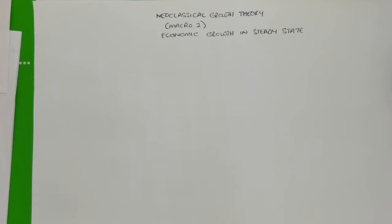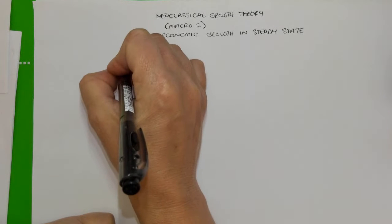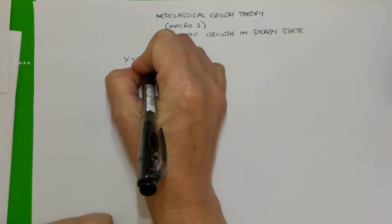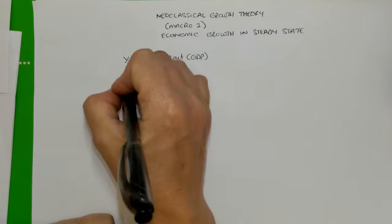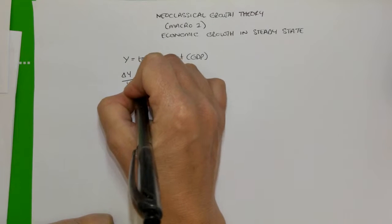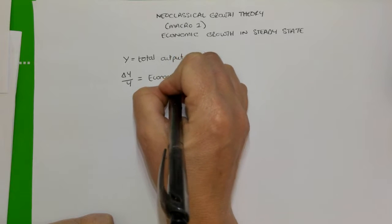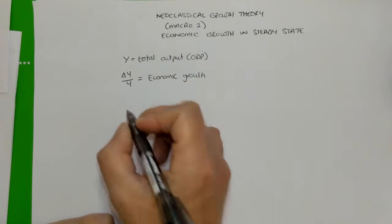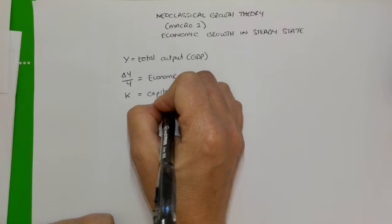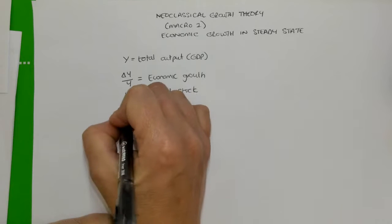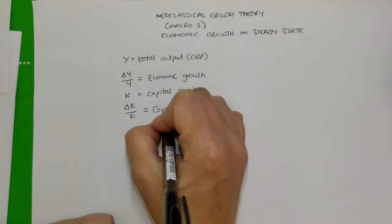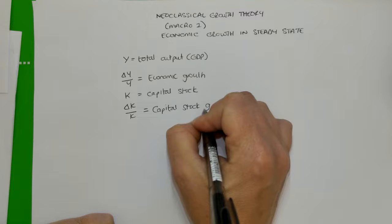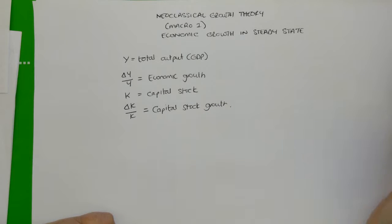To understand that in steady state there is still economic growth, let's go back to some of the definitions. We know that Y is equal to total output — you can think of that as GDP. Change in Y over Y would then be our economic growth. And K is the capital stock. Change in K over K would be capital stock growth.